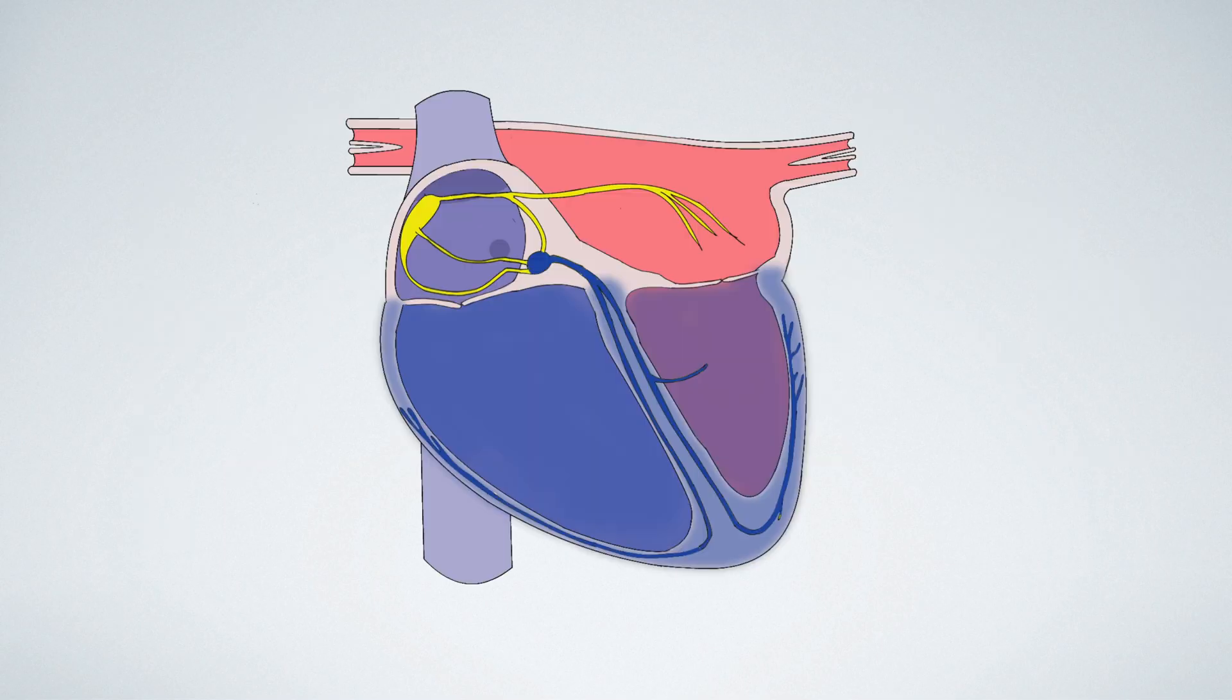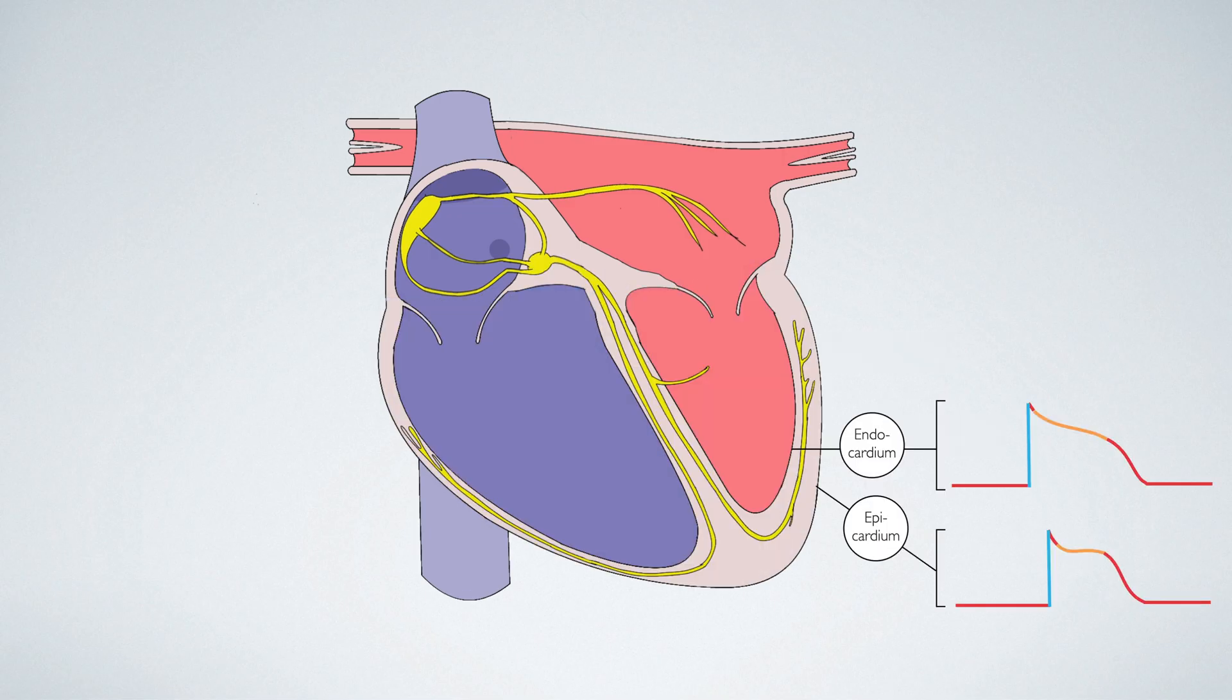The final thing I'd like to talk about here is the repolarisation of the ventricles and why this starts at the epicardium and moves towards the endocardium. Well, this is nicely explained in the epicardial and endocardial cell action potentials. You'll note that the epicardial action potential is much shorter compared to the endocardial action potential. And for this reason, the epicardial cells repolarise earlier compared to the endocardial cells. And this explains why the myocardium repolarises from epicardium to endocardium.